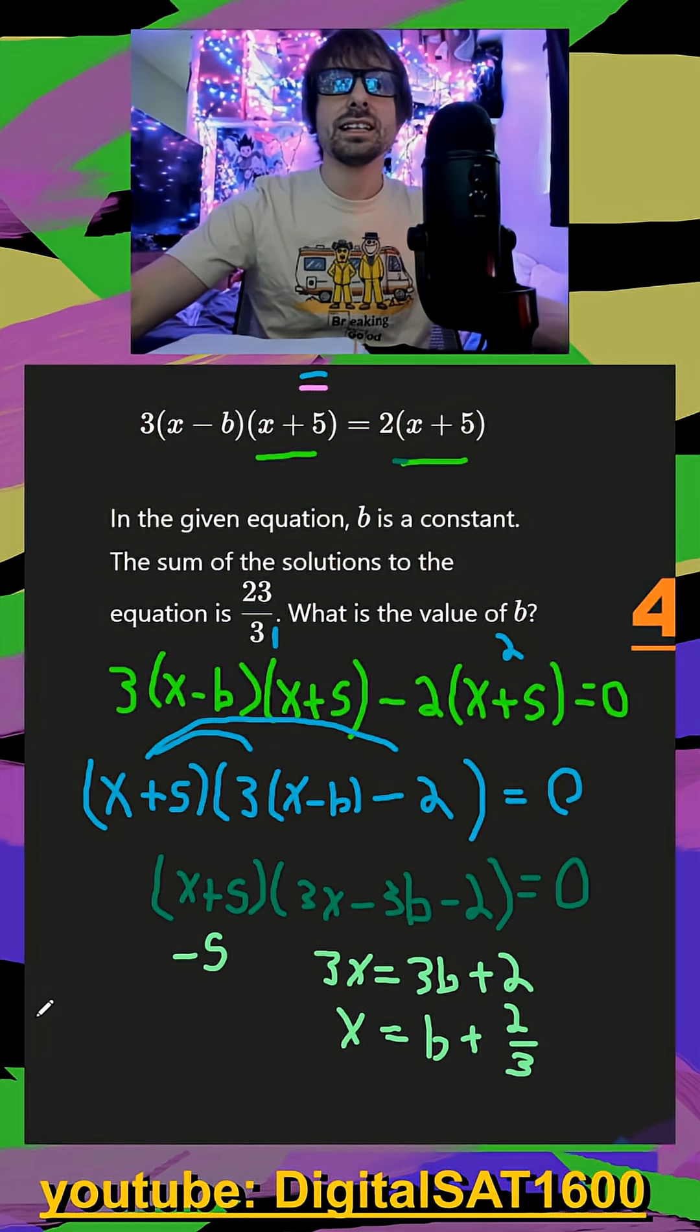So if we add both of these together, negative five plus b plus two thirds, this should be equal to the sum of our solutions, 23 over three.